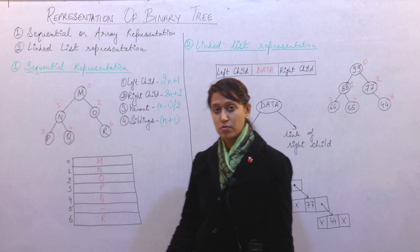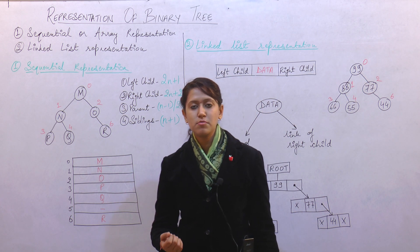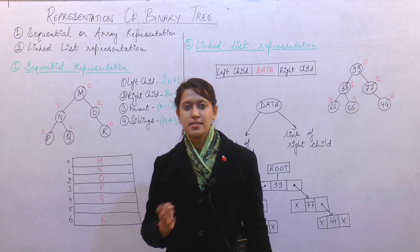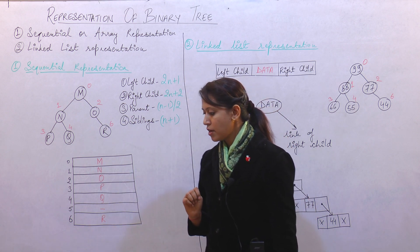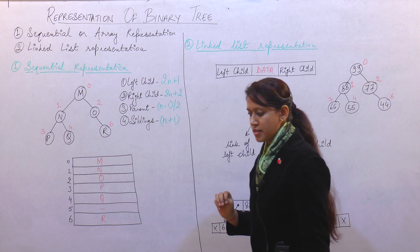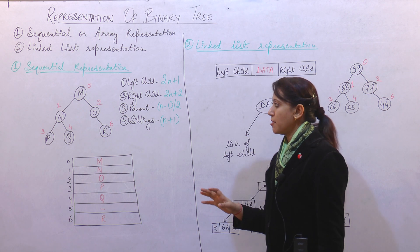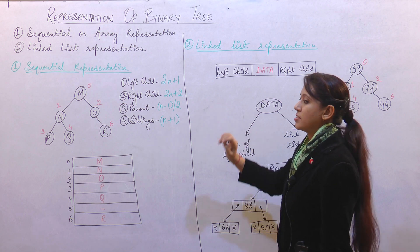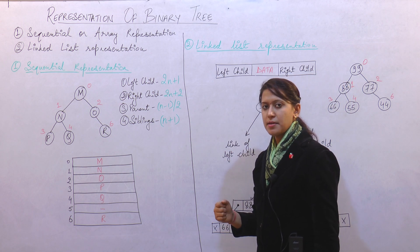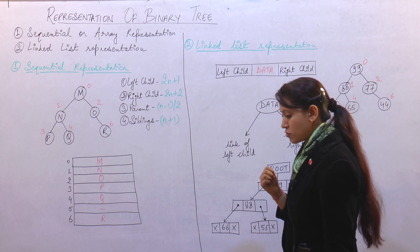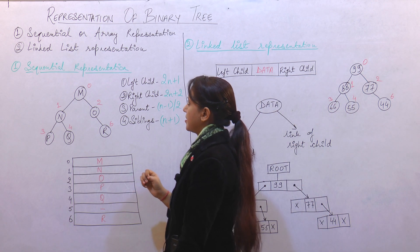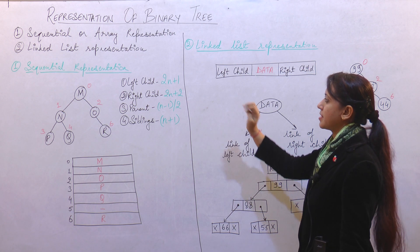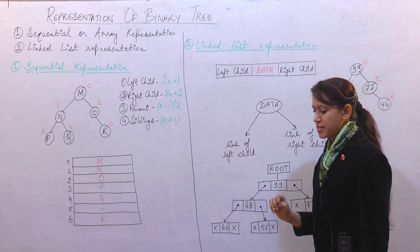If any node has more than two branches, then that tree will not be considered as a binary tree. So this was the basic introduction about binary tree. Now we will study about the representation of binary tree. There are two ways of representing a binary tree: first one is sequential or array representation, and second one is linked list representation.